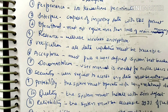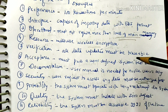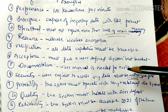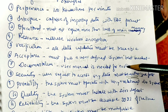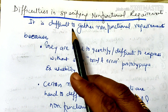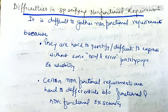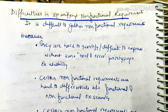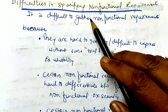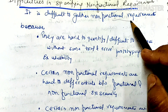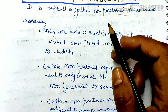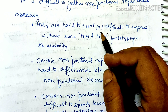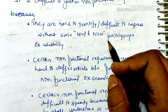These are the non-functional requirements that the customer expects, which we need to specify in the Software Requirement Specification document. Difficulties in specifying non-functional requirements: it is difficult to gather non-functional requirements because they are hard to quantify or difficult to express without some trial and error.